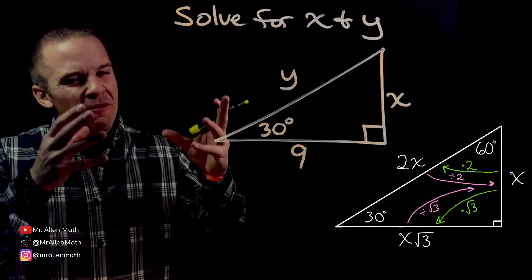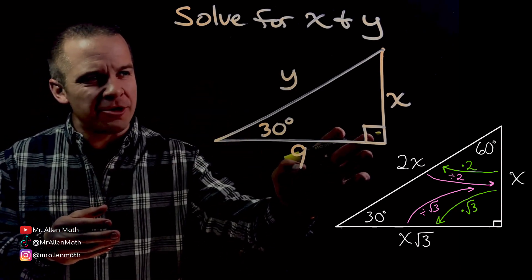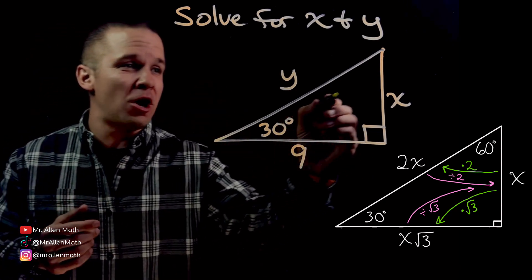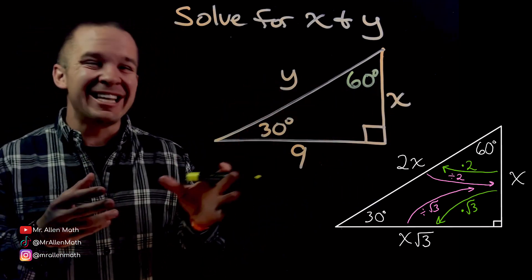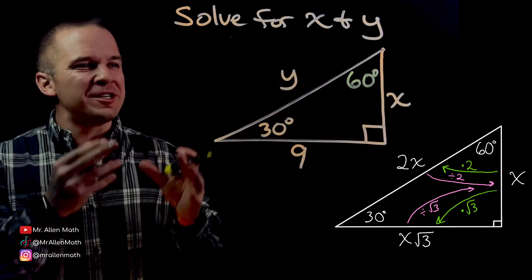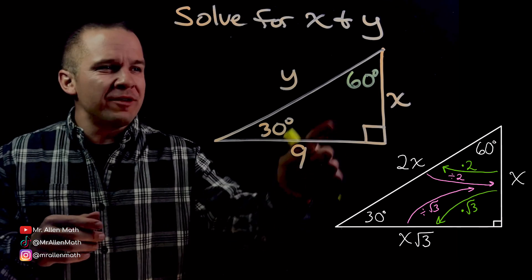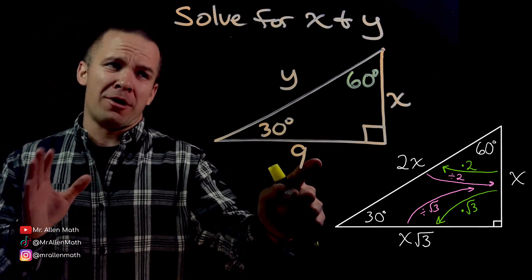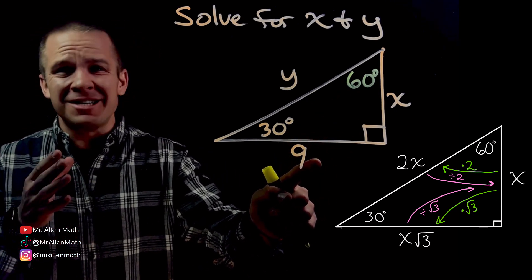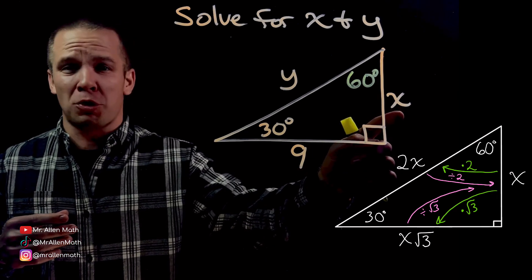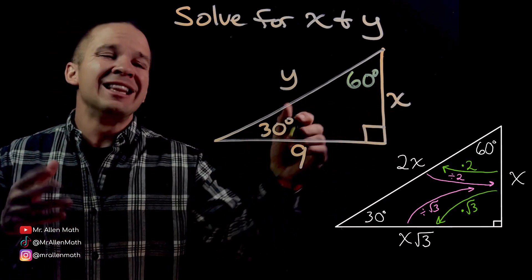We're about to solve this triangle for X and Y. I've got a 30 degree angle and a 90 degree angle — what's left over? 60 degrees. There are 180 degrees in that triangle: 30-60-90. I've got the side across from the 60, so I need to divide by root three to get back to the short side, which is across from my 30.